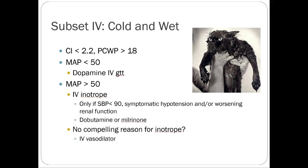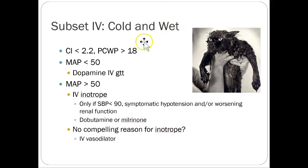Subset four is the cold and wet patient — hypoperfusing and fluid overloaded. Treatment is very similar to subset three: MAP-directed drips with dopamine if needed, then your inotrope. Hypoperfusion is the biggest concern here because of risk of end-organ damage. The difference from subset three is that this patient is fluid-overloaded, so you don't need to worry about inadequate volume for the heart to pump. Get the inotropic support going quickly, and address the fluid overload as you stabilize.